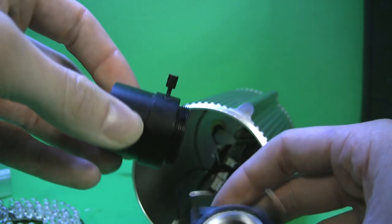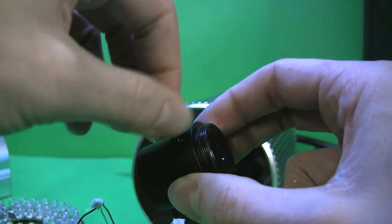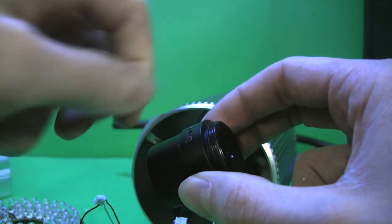Also, don't forget to remove the screw that locks in the focusing. If it's there, you won't be able to thread in your lens.